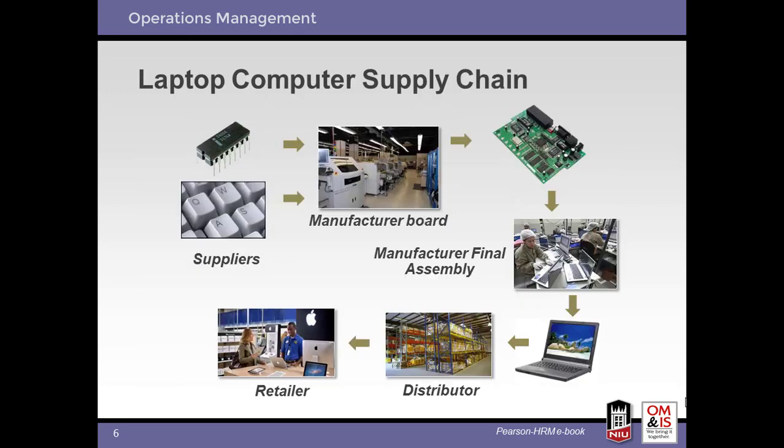Here's an example of a supply chain. For computers, components are added to circuit boards, which are then assembled into the completed product. The computer makes its way to the customer via the distributor, and finally the retailer — think of Best Buy, for example.